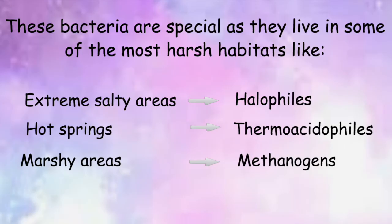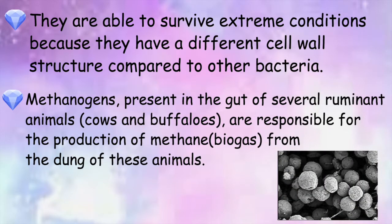Archaebacteria: these bacteria are special as they live in some of the most harsh habitats, like extreme salty areas, hot springs, and marshy areas. They are able to survive extreme conditions because they have a different cell wall structure compared to other bacteria. Methanogens, present in the gut of several ruminant animals, are responsible for the production of methane from the dung of these animals.